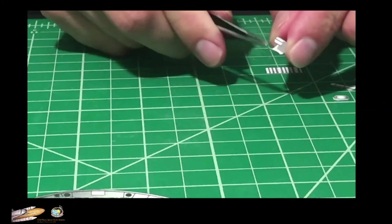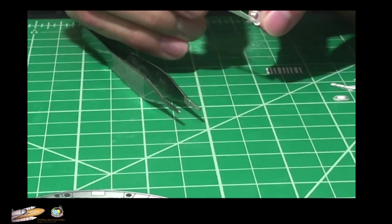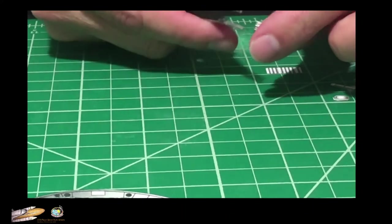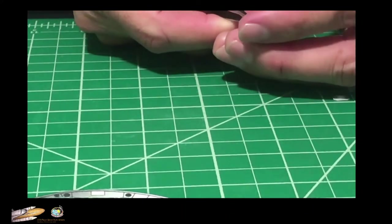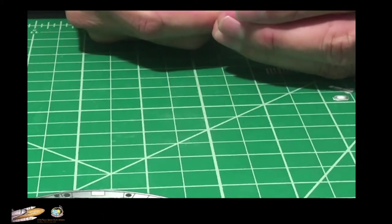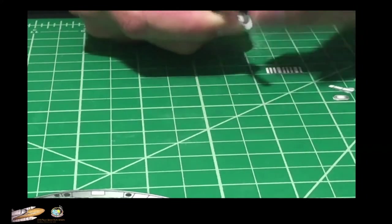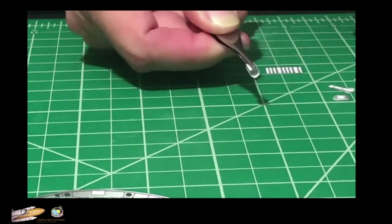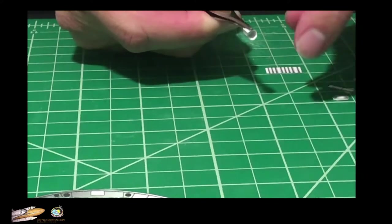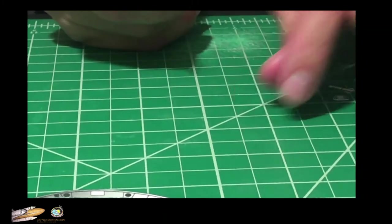Now we are going to put glue here on this tab. And we are going to close it. And we are going to let it dry. So this is the bottom section.